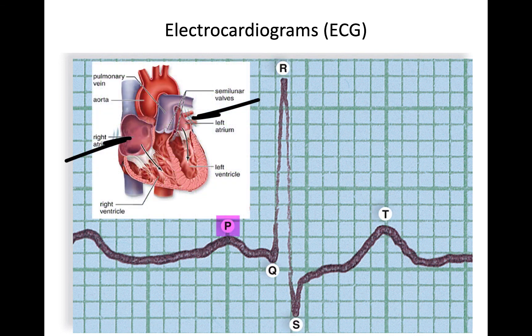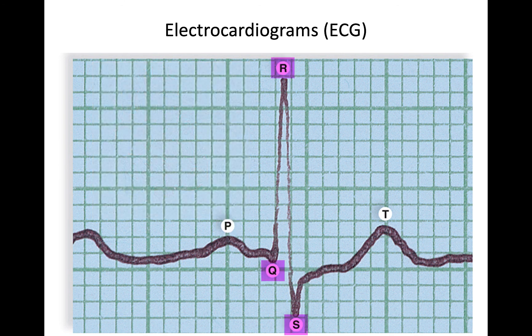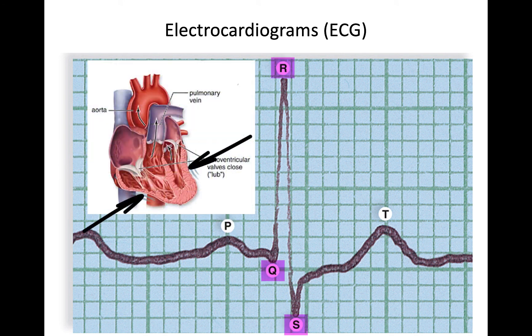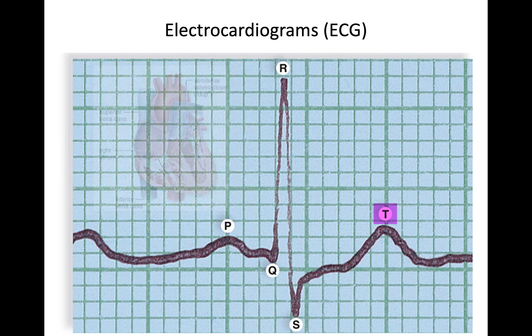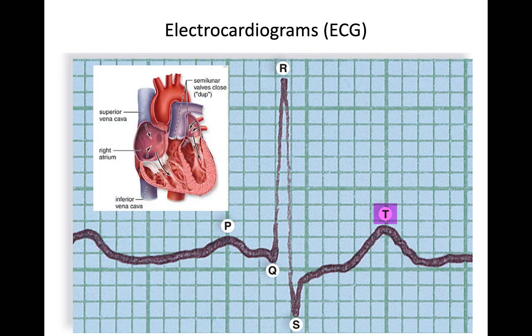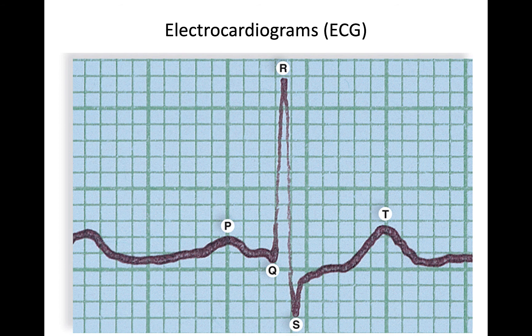P is where the atria is contracting. Q, R, and S show the ventricles contracting, or systole. T is where the entire heart relaxes, or diastole, before the next contraction occurs and the cycle repeats.